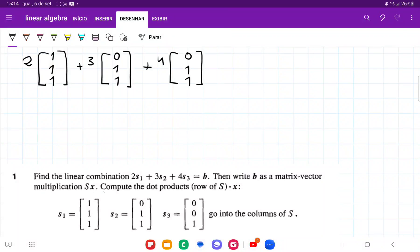For number one, they want us to find the linear combination 2s1 plus 3s2 plus 4s3 that is equal to b.